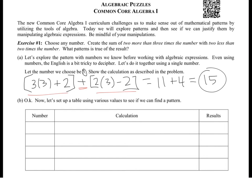So now we're just going to pick some random numbers and see if we can figure out what is going on with them. So let's pick 4. If I have 3 times 4 plus 2 plus 2 times 4 minus 2. So this becomes 3 times 4 is 12, 12 plus 2 is 14. And 2 times 4 is 8, 8 minus 2 is 6. 14 plus 6 is 20.